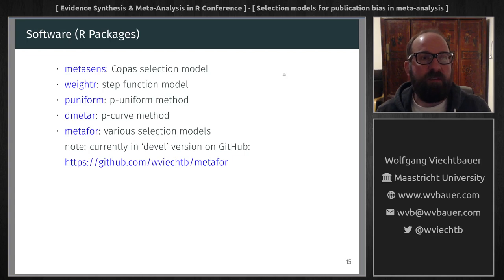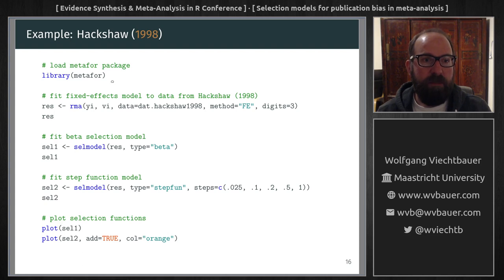How can you fit these types of models? Well, there are several R packages to do so, and I recently added the possibility to fit selection models to the metaphor package. So to give an example, here I'm fitting a fixed-effects model to the data that I showed to you earlier. So here we have a data set that includes the log odds ratios and the corresponding sampling variances. And once I have such a model object, then I can use the cell model function to fit, for example, the beta selection model or step function model and several other models.